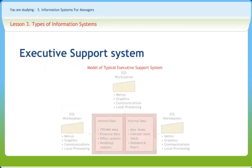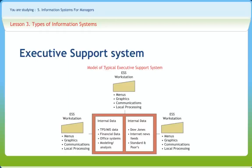An Executive Information System is a type of management information system intended to facilitate and support the information and decision-making needs of senior executives by providing easy access to both internal and external information relevant to meeting the strategic goals of the organization. It is commonly considered a specialized form of decision support system. The emphasis of EIS is on graphical displays and easy-to-use interfaces, with strong reporting and drill-down capabilities. In general, EIS are enterprise-wide DSS that help top-level executives analyze, compare, and highlight trends in important variables to monitor performance and identify opportunities and problems.